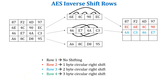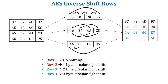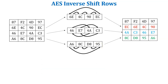Next rule is row four: performs three byte circular right shift. Let's start with the first value A6 — it performs three byte circular right shift and moves to the last position of the row. Next value is 8C — it performs three byte circular right shift and moves to the first position of the row. Next value is D8 — it performs three byte circular right shift and moves to the second position of the row. And the last value is 95 — it performs three byte circular right shift and moves to the third position of the row.